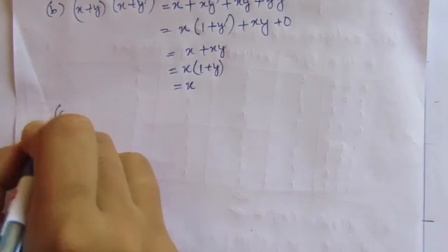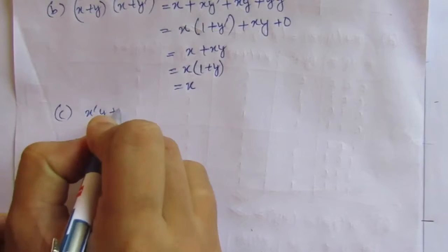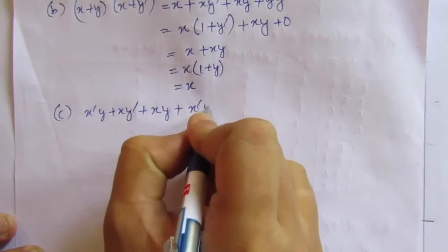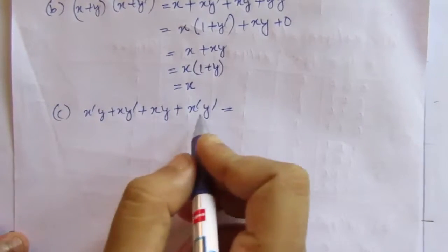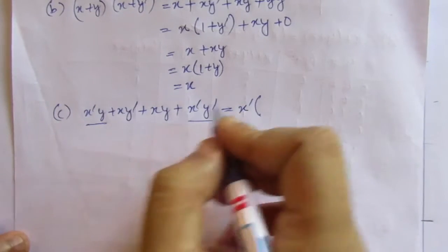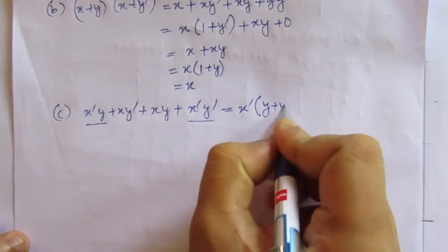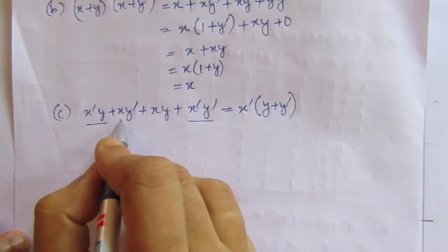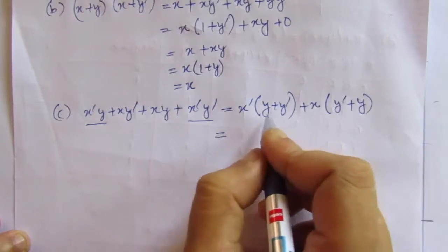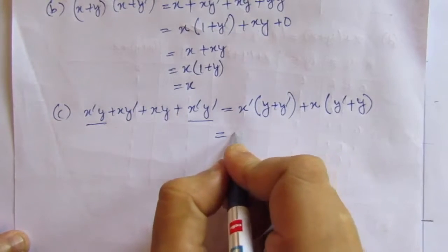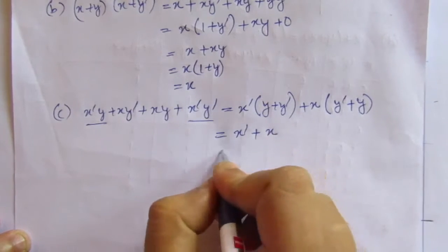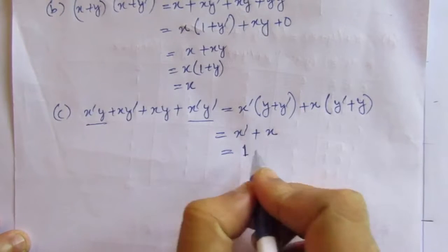Now let us go to part c: x̄y + xȳ + xy + x̄ȳ. If we take x̄ common from the first and fourth terms, we get x̄(y + ȳ). And from the second and third terms, if we take x common, we get x(ȳ + y). Both y + ȳ equal 1, so we have x̄ + x, which is also 1. The answer is 1.